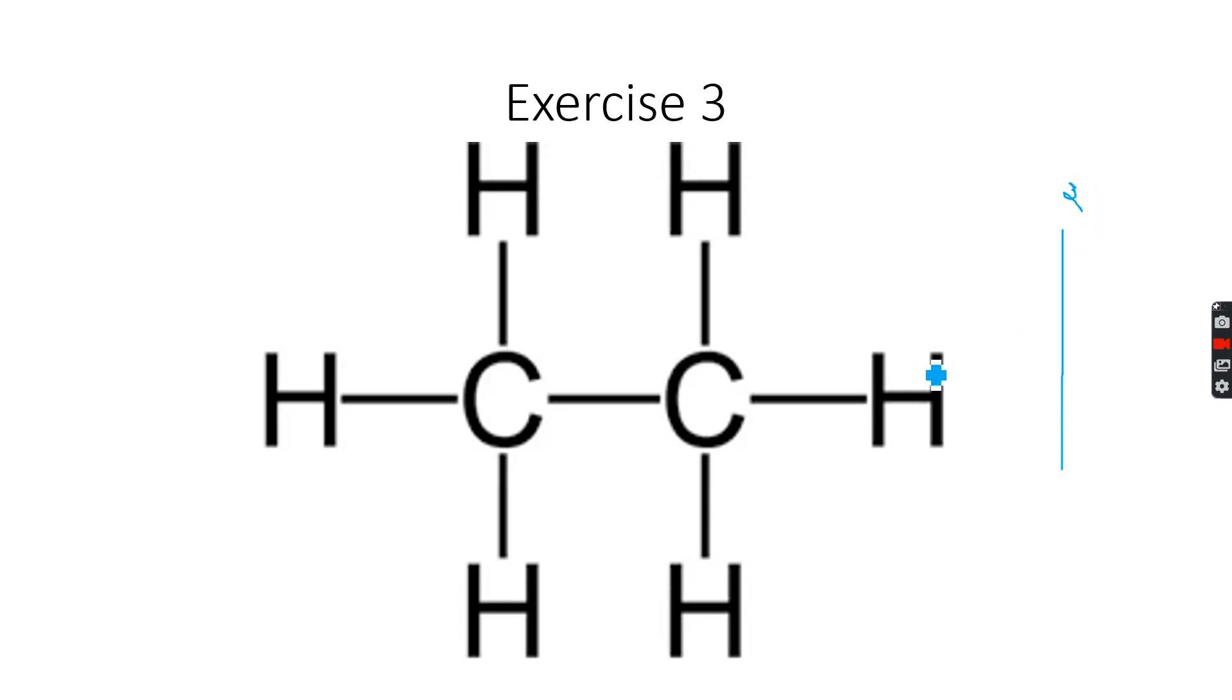If it was proton NMR, we still wouldn't have any splitting because it's the same chemical environment. But since this is carbon-13 NMR, we will have no splitting, and we will have only one peak because both of these carbon atoms are attached to three hydrogen atoms and to each other.